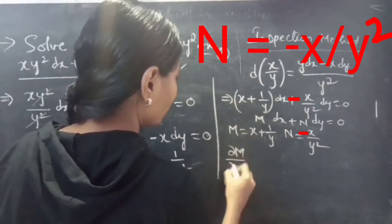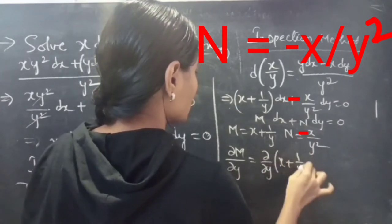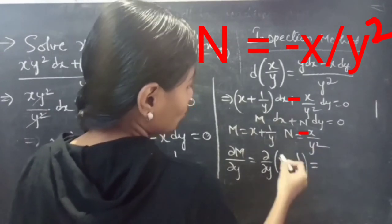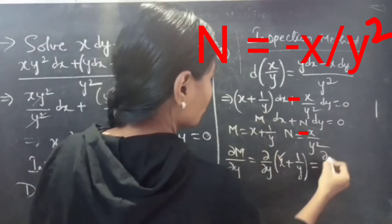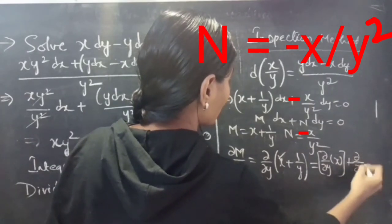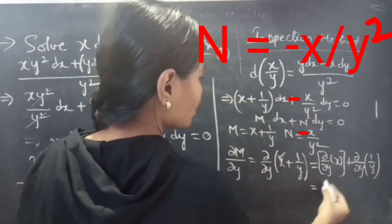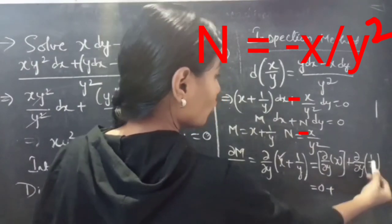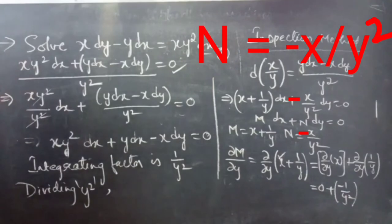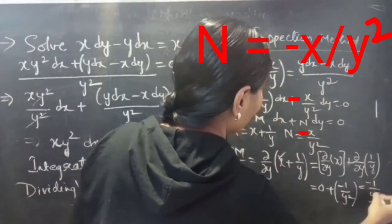Now find ∂M/∂y. ∂M/∂y equals ∂/∂y of (x + 1/y). Since we do partial derivative with respect to y, x is constant. The partial derivative of the constant term is 0, and the partial derivative of 1/y with respect to y is minus 1/y squared. So ∂M/∂y equals minus 1/y squared.